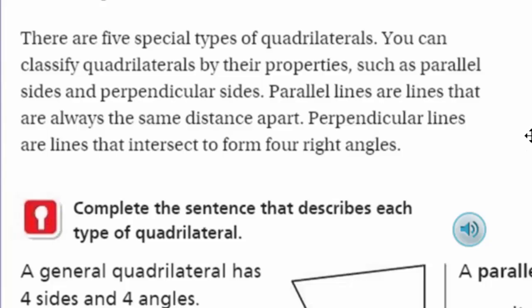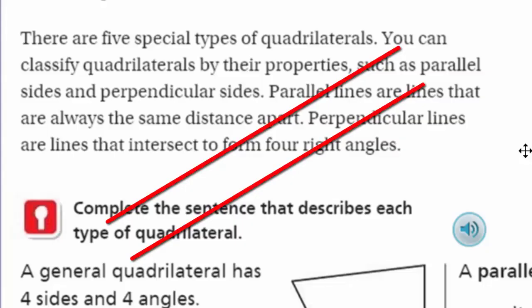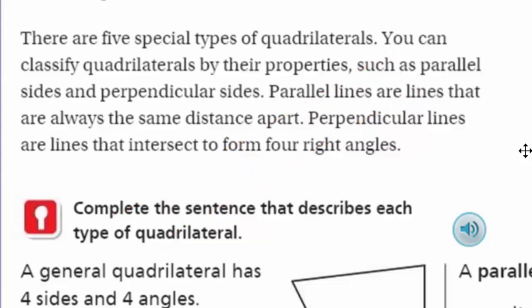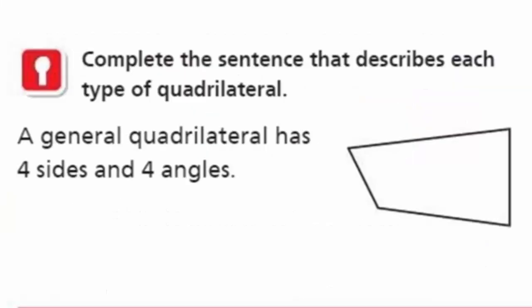Of course, quadrilaterals, it states four-sided figures. And it does say below, there are five special types of quadrilaterals. Again. There are five special types of quadrilaterals. Oh, did I hear an echo? You can classify quadrilaterals by their properties. Properties just means what's their characteristics, things that make them up, who they are, such as parallel sides and perpendicular sides. And parallel sides, you know about parallel lines. Yes, we learned this, I think, in first grade. No, maybe more like third grade or fourth grade, possibly.